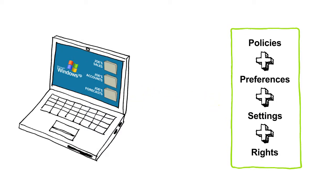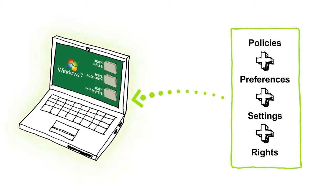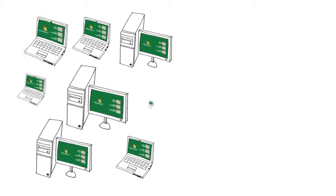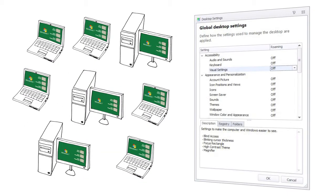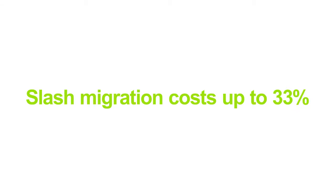So when the client operating system is upgraded, all existing user settings and policies are applied on demand to the user's new Windows 7 desktop. By virtualizing and independently managing all aspects of the user, the time and cost of Windows 7 adoption can be reduced by up to 33%.